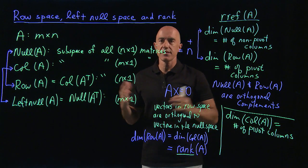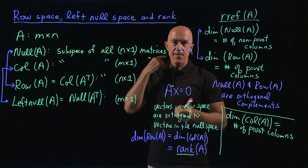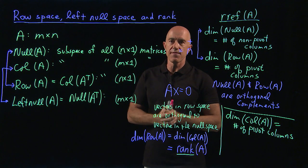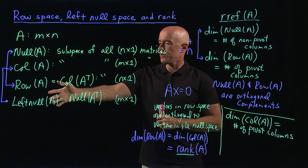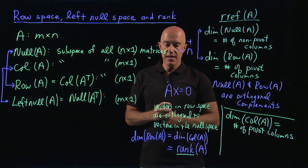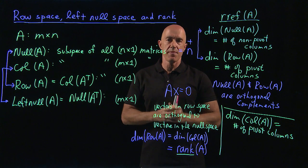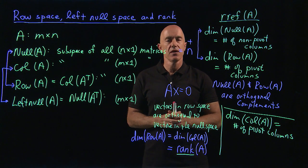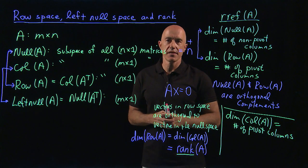To summarize: a matrix has four fundamental subspaces — the null space, column space, row space (which is the column space of A^T), and the left null space (which is the null space of A^T). The key result is that the dimension of the row space equals the dimension of the column space, and this common dimension is called the rank of the matrix. I'm Jeff Chasnov. Thanks for watching, and I'll see you in the next video.